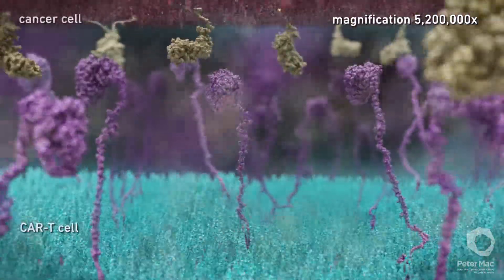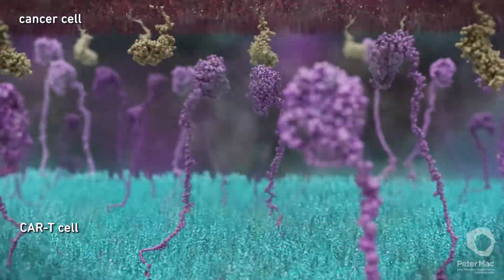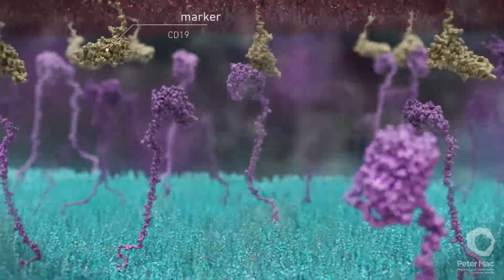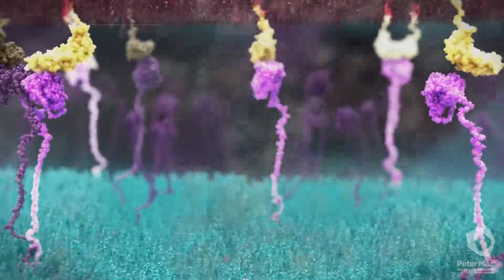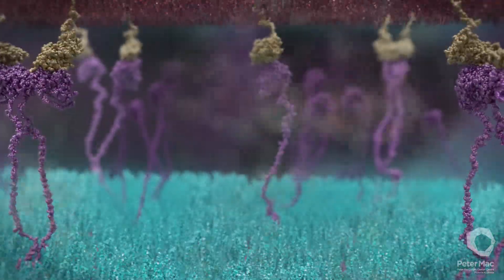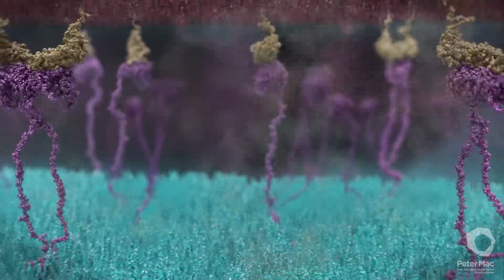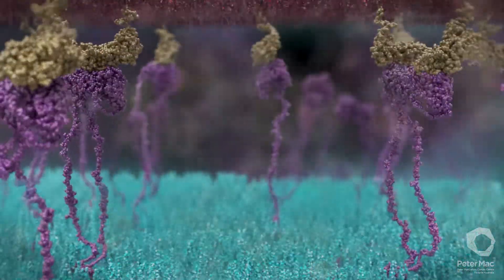We are now looking at the magnified surface of a CAR T-cell in contact with a cancer cell. Once they are in the body, the CARs can directly bind to specific markers on the patient's cancer cells, shown in yellow, overcoming the need for MHC1 to be present. The bound CARs then cluster together.